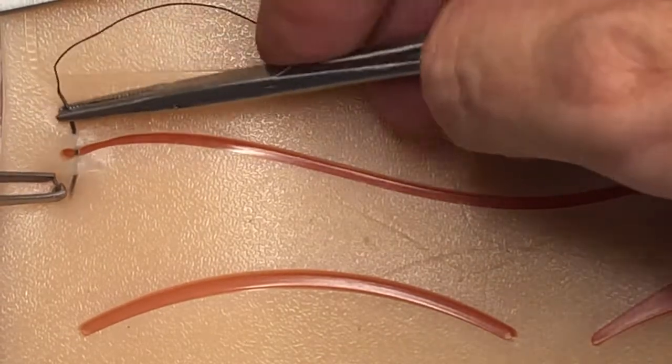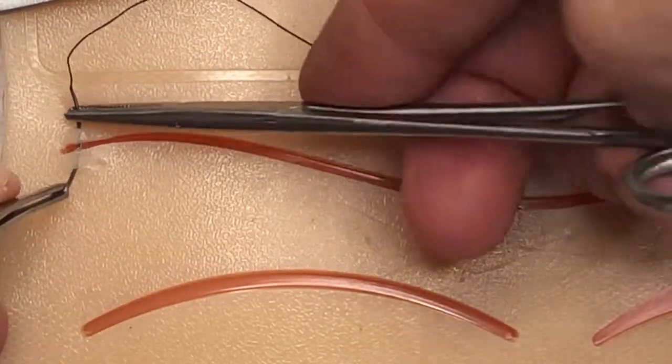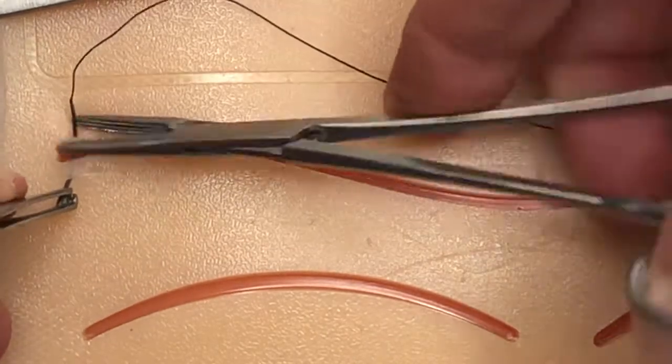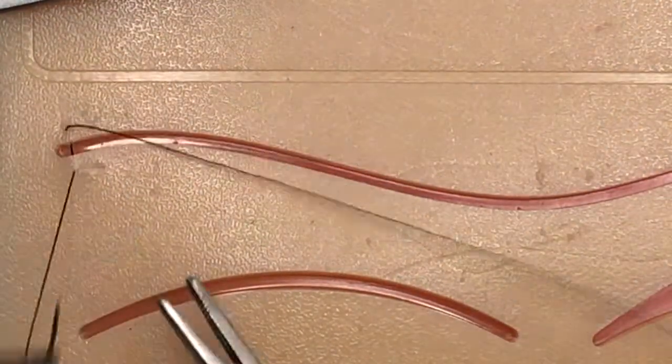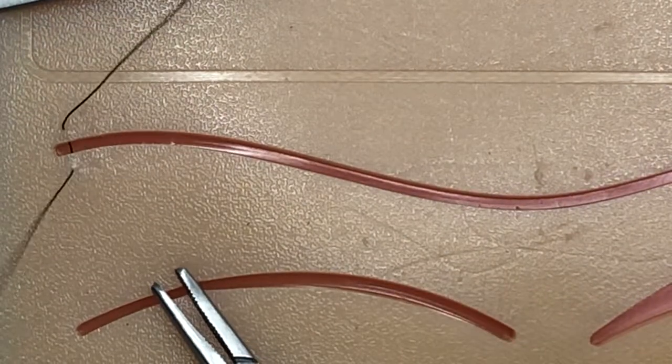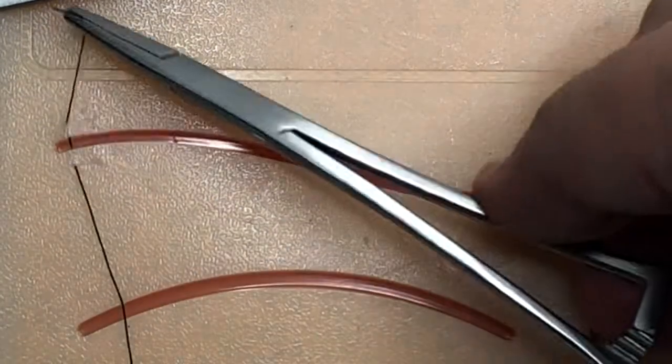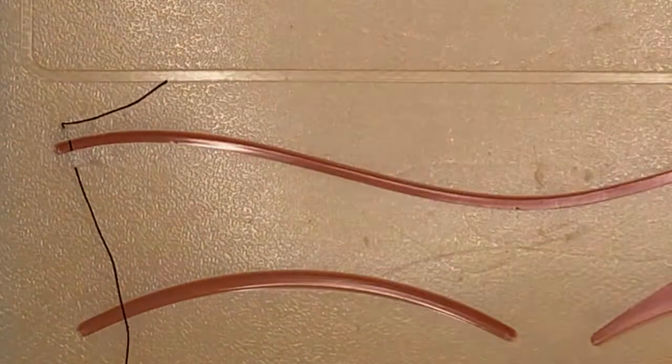What you're going to do is you want to come through and really try to exit the same distance from the laceration that you entered on the opposite side. We're going to use our instruments to pull the thread through, leave a little bit of a tail here so that when you go back in and tie your knot you have enough length.